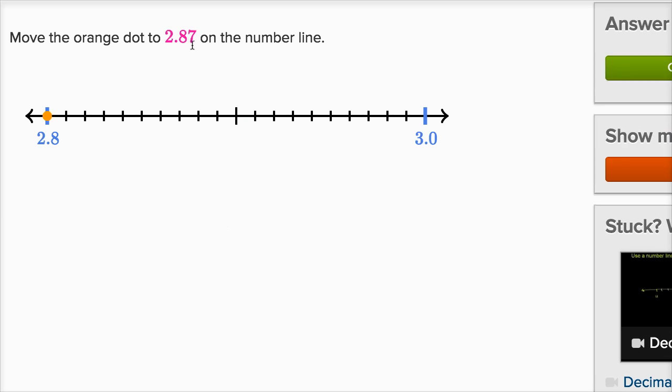Move the orange dot to 2.87 on the number line. Alright, this is interesting. So this is 2.8, that's 3.0. Halfway in between would be, this is kind of this longer hash mark or this longer tick mark right over here. This would be 2.9.